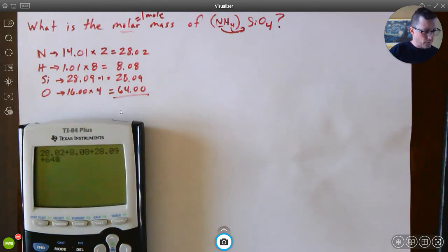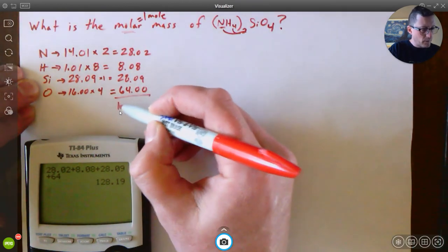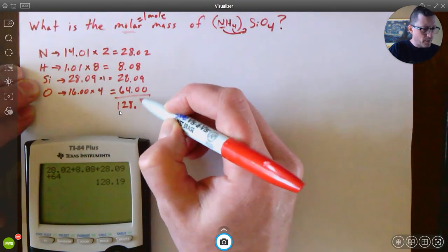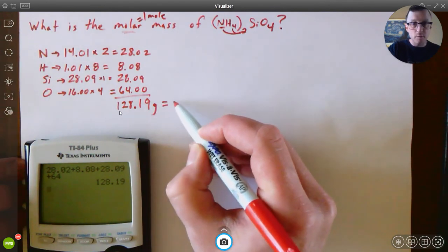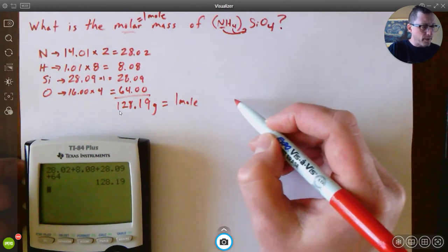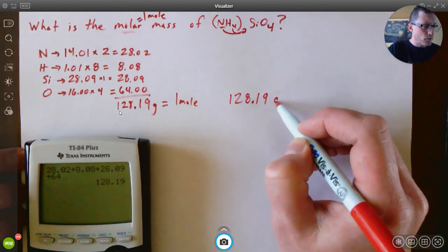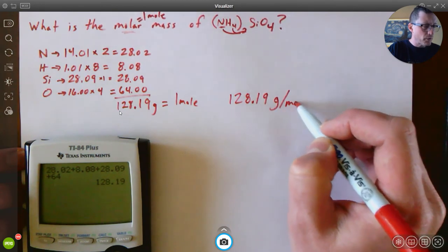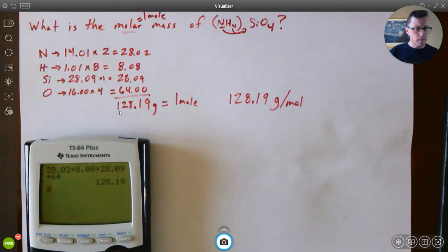That gives me 128.19 grams, and that's how many grams are equal to one mole, or another way to write that is to say 128.19 grams per mole. Okay, so when I ask for molar mass, that is an example of how we do that.